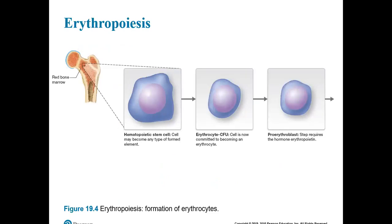We also need to discuss erythropoiesis — the process by which your body forms red blood cells. 'Erythro' refers to red blood cells and 'poiesis' means formation. This process takes place inside the red bone marrow, where stem cells reside and give rise to red blood cells as they go through development.